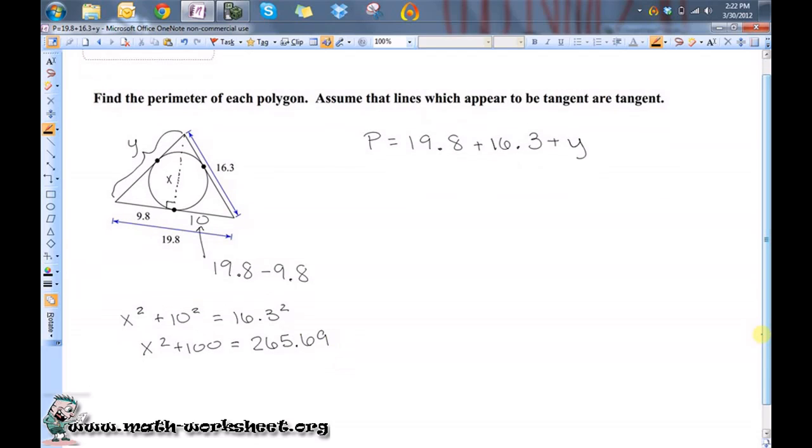Okay, so that means x squared equals 165.69. So, that means x is equal to the square root of 165.69. Well, here's a trick. Don't round this. Not yet.